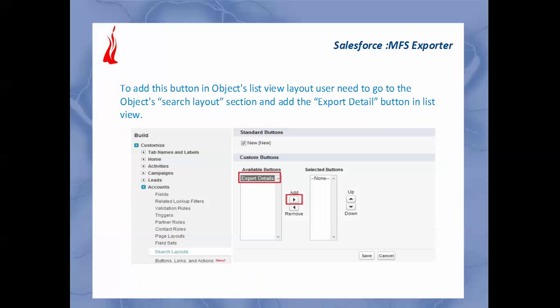For this we need to follow some steps. We need to go through Setup, then Customize, then select the particular object name — in this picture that is Account. After clicking on the Account dropdown arrow, we need to click on the Search Layout section. After that, we can see the Export Details button and we need to add this button to the Selected Buttons picklist.